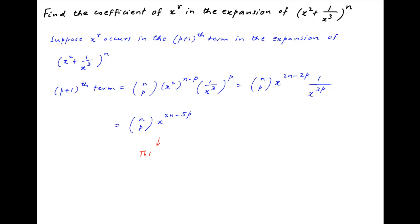Since this term contains x raised to the power r, we equate the power of x: 2n minus 5p equals r. Therefore, p is equal to (1/5)(2n minus r).